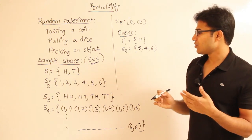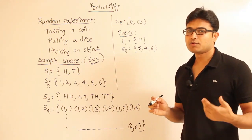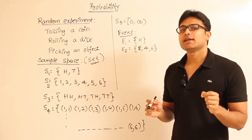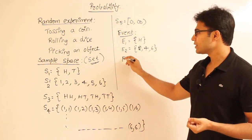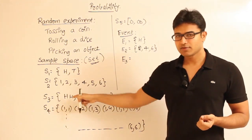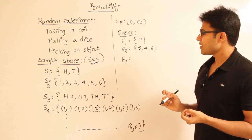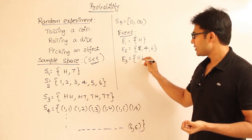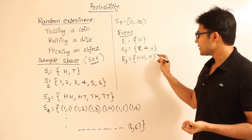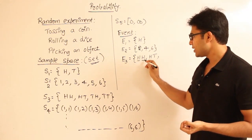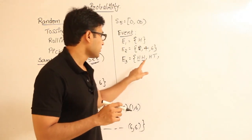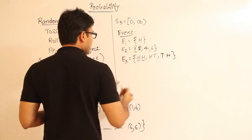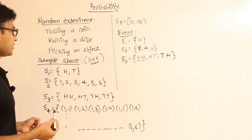Let's say we are flipping two coins and we want the event of getting at least one head. We call it E3, which is a subset of S3. To get at least one head: head-head contains at least one head, head-tail has a head on the first coin, and tail-head has a head on the second coin. So E3 = {HH, HT, TH} — that is the event of getting at least one head.